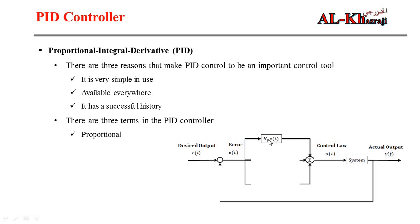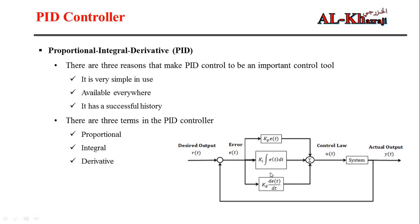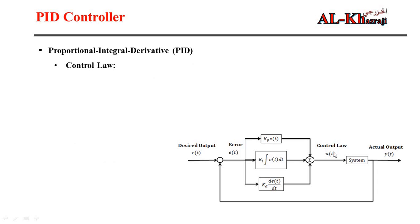The PID controller has three terms. The first is the proportional term, which multiplies Kp by the error. The second is the integral term, which multiplies Ki by the integral of the error. The third is the derivative term, which multiplies Kd by the derivative of the error. All these terms have different influences on the control law.